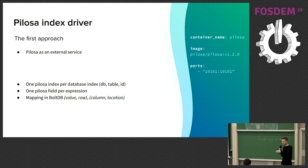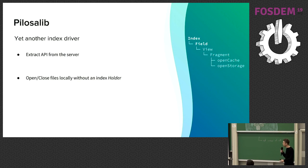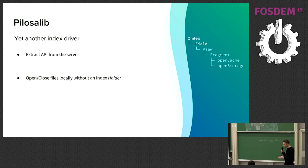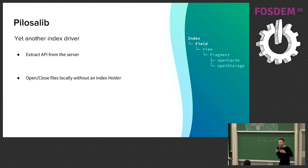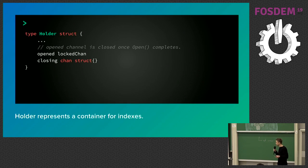We decided to hack Pilosa a little bit and embed it directly into GitBase, so we could communicate with it like a library. We implemented a new index driver called Pilosa lib, got rid of the server part, and extracted the API. We tried to use the holder, which lets you open the whole hierarchy with just open and close calls — but we had many problems and random crashes in concurrent usage.